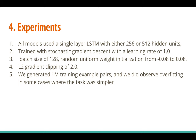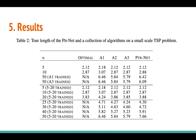For experiments, they use a single-layer LSTM with either 256 or 512 hidden units, trained with SGD at learning rate 1.0, batch size 128, random uniform weight initialization in [-0.08, 0.08], and L2 gradient clipping of 2.0. They generated 1 million training example pairs.